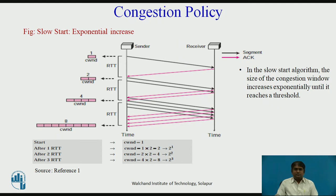The slow start algorithm is based on the idea that the size of the congestion window starts with one maximum segment size, that is, MSS. The MSS is determined during connection establishment using an option of the same name. The size of the window increases by one MSS each time one acknowledgement arrives. As the name implies, the algorithm starts slowly but grows exponentially.